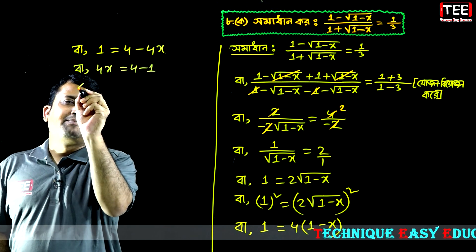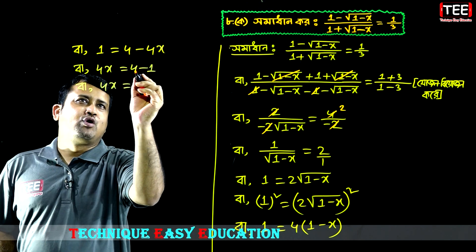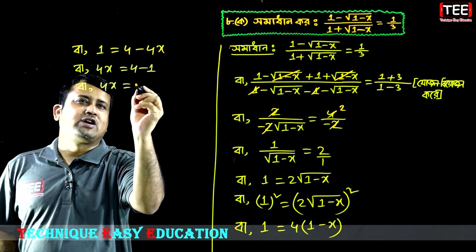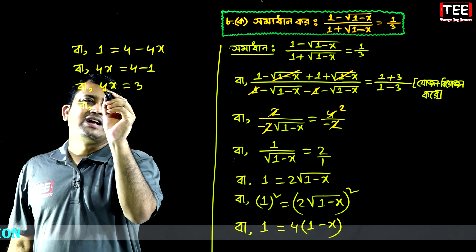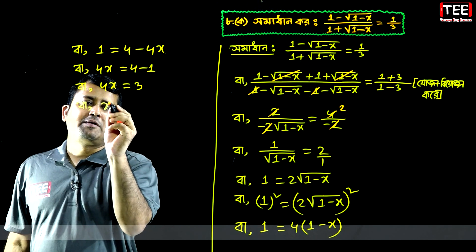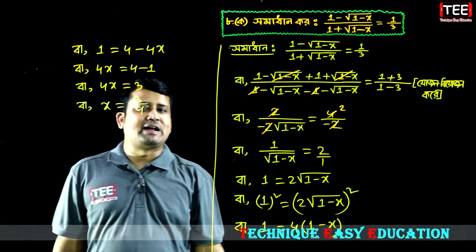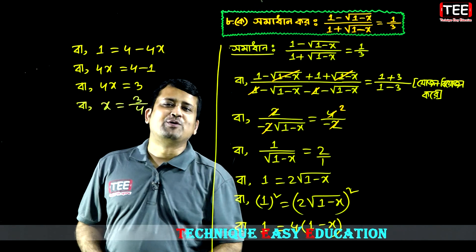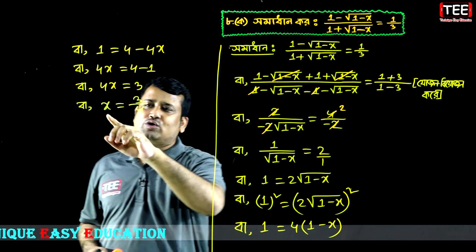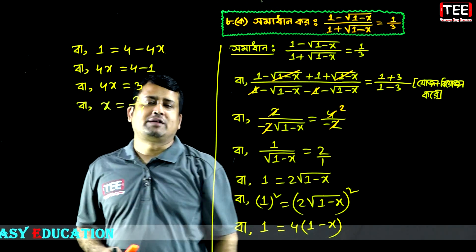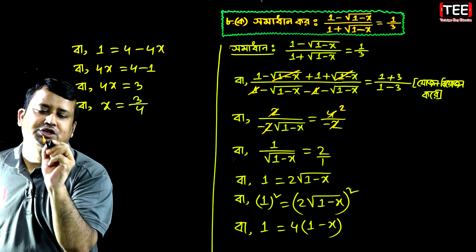এবার আমরা x গুলো এক বাশে নেবে, এটা minus, পক্ষান্তর করে। x equal to কাঁতর কেকাতর।